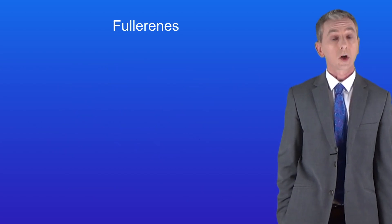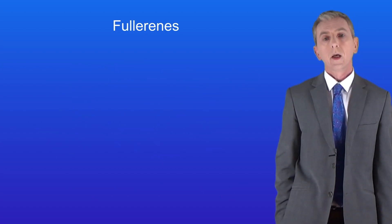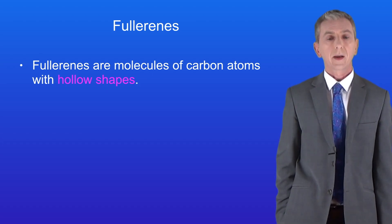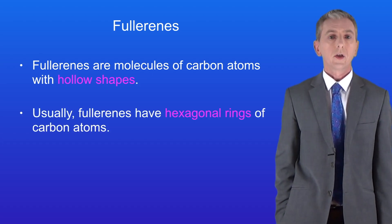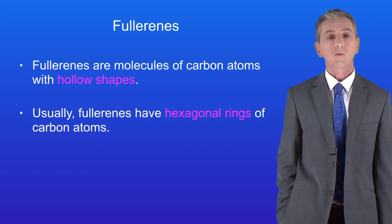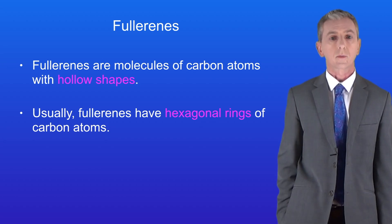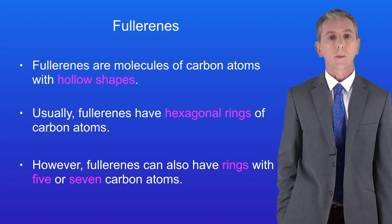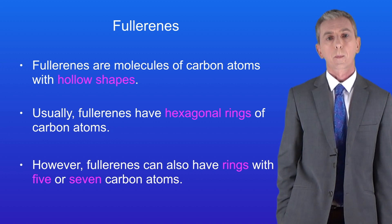Now let's look at fullerenes. Fullerenes are molecules of carbon atoms with hollow shapes. Usually fullerenes have hexagonal rings of carbon atoms, but they can also have rings with five or seven carbon atoms.